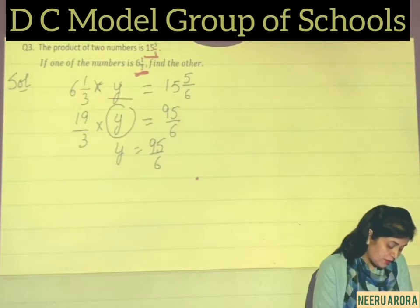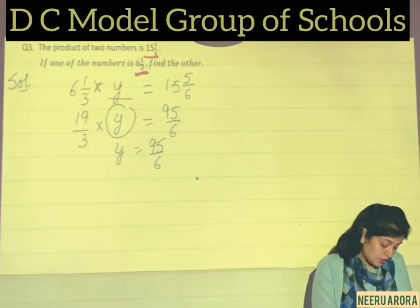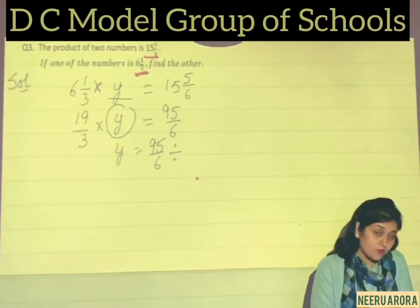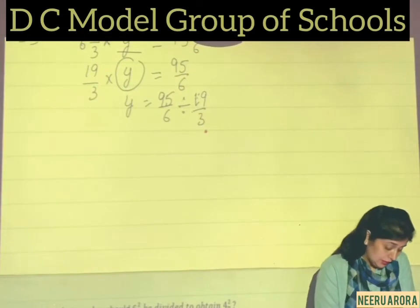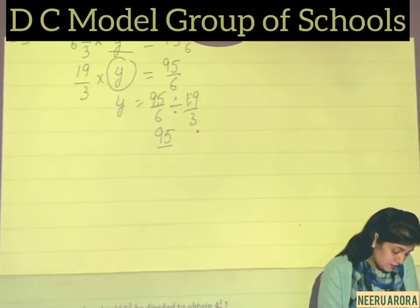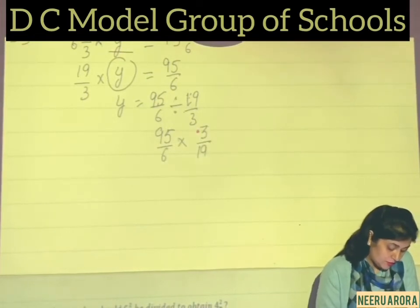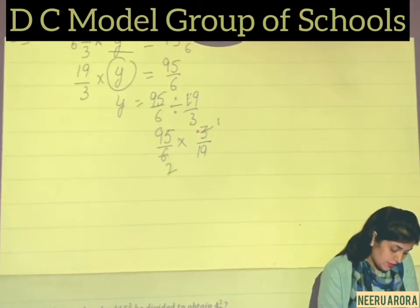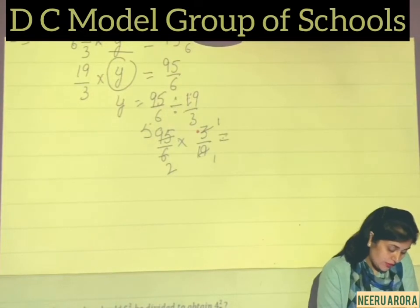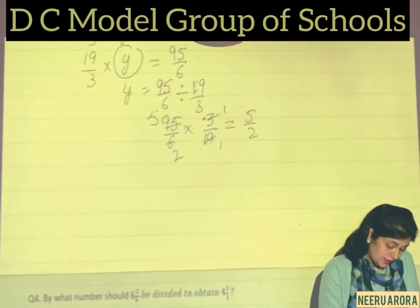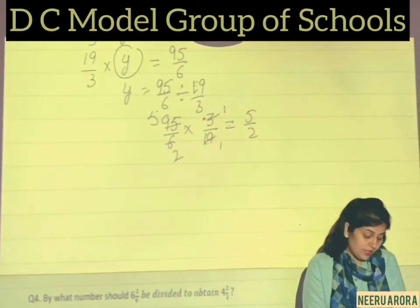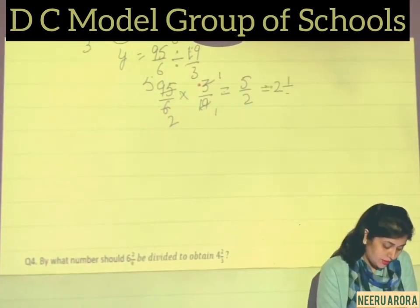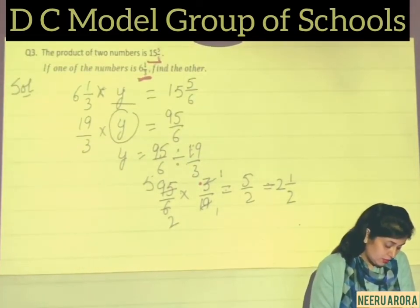Y is the unknown value. We transpose 19/3 to the right-hand side; since it was multiplying, it becomes division. By the rule, we multiply by the reciprocal of 19/3, which is 3/19. Doing the cancellation: 95/6 × 3/19 — 3 cancels with 6 to give 2, and 19 cancels with 95 to give 5 — so we get 5/2. This is an improper fraction, which converts to the mixed fraction 2 1/2. So the second number is 2 1/2.